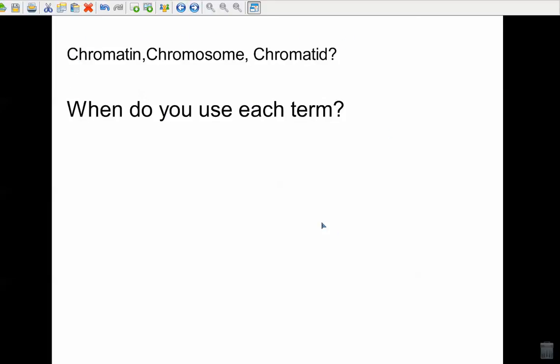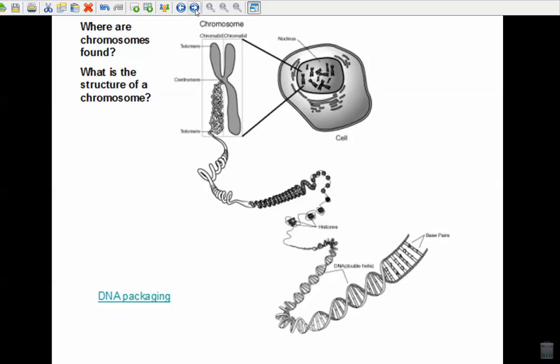We're going to talk mainly about mitosis and cell division here. So let's start here: chromatin, chromosome, chromatid. When do you use each term? Let's take a look at this. So this is your standard eukaryotic cell.